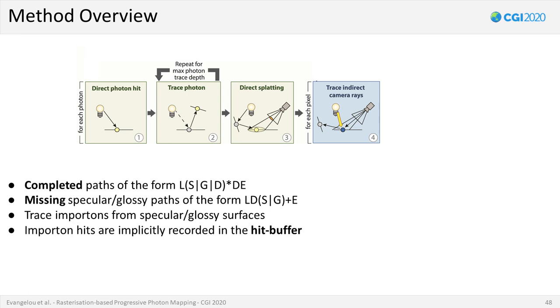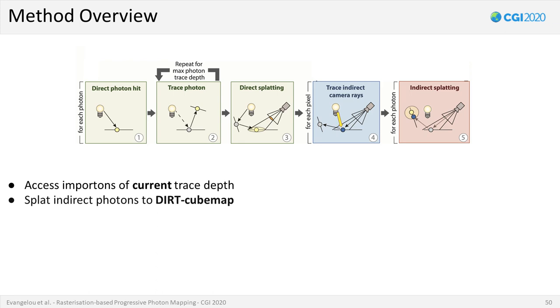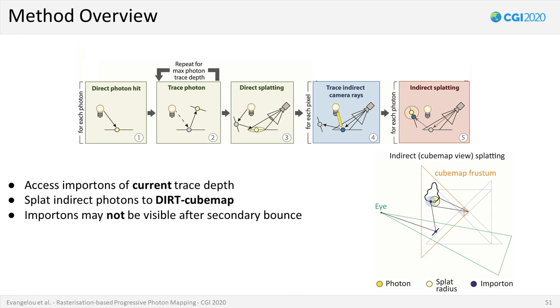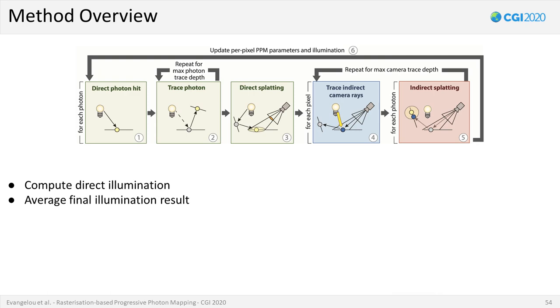Since we use DIRT to trace the importons, successful surface intersections are implicitly recorded from each hit buffer, and as a result, no extra storage and indexing mechanisms are required. Active importon hits for the current trace depth can now be indexed by splatting indirectly scattered photons into the DIRT cubemap. This is a necessary operation as importons may not be directly visible to the camera after the secondary bounce. It is important to note that photon splat projections are independent of the cubemap resolution, and therefore the latter does not introduce any approximations to the final flux distribution. Resolution only affects the sparsity in the length of the hit records. Repeating these two stages until a diffusive event or a maximum depth is reached will be sufficient to completely simulate every missing illumination path. Finally, accumulating direct illumination and averaging the final rendering output will complete a single iteration of our photon mapper.